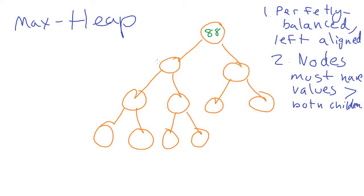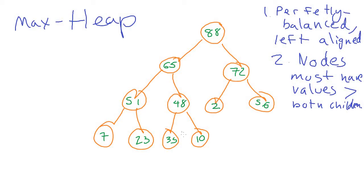I could pick any two values under the 88 and that would make a correct max heap. Let's say 65 and 72. There's no particular relation between the two children — it doesn't matter that the lesser one is on the left. These rules apply to all nodes, so the 65 also has to be bigger than both of its children. Maybe a 51 and a 48. We can fill out more data — 7, 23, 35, 10, 2, and 56 — as long as each value is less than its parent.